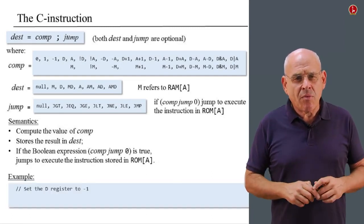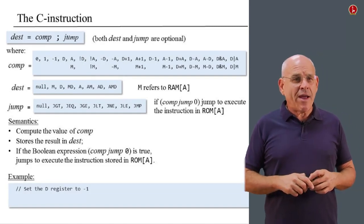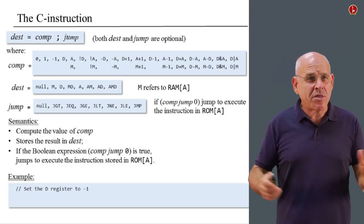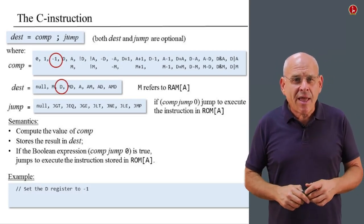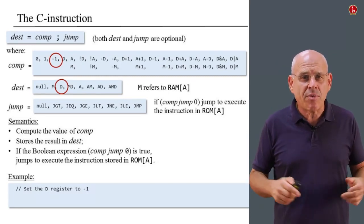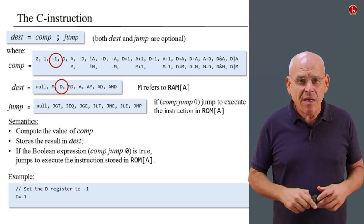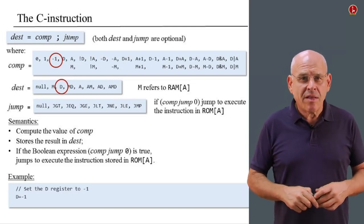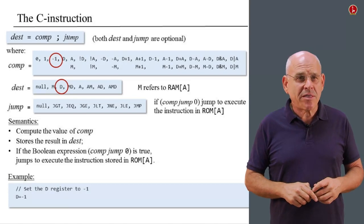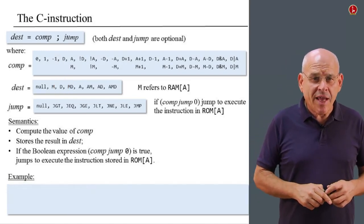Let's say I want to set the D register to minus one. I look at the language specification and see that minus one is one of the values I can compute, and D is one of the eligible destinations. So I can simply say D = -1. The jump directive is optional, so I don't have to specify it. Case closed.